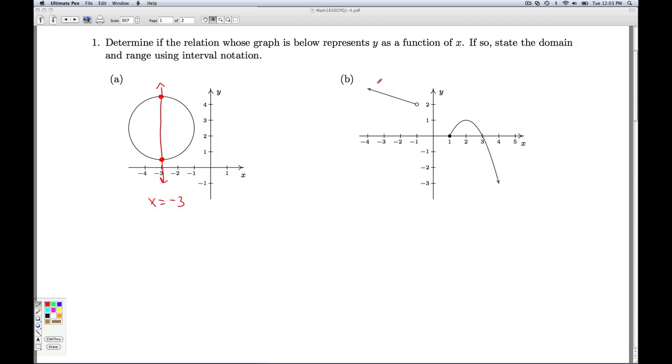In part b, no matter what vertical line I pick, it's going to cross the graph at most once. So this does represent y as a function of x. So y is a function of x, and so then we can go ahead and find its domain and range.